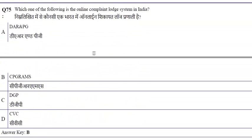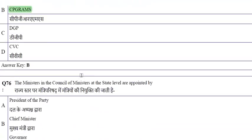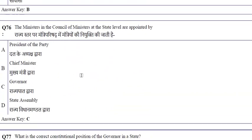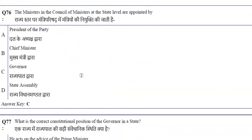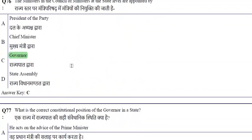The online complaint redressal system in India is CPGRAMS. The ministers in the Council of Ministers at the state level are appointed by the Governor, who also administers their oath.